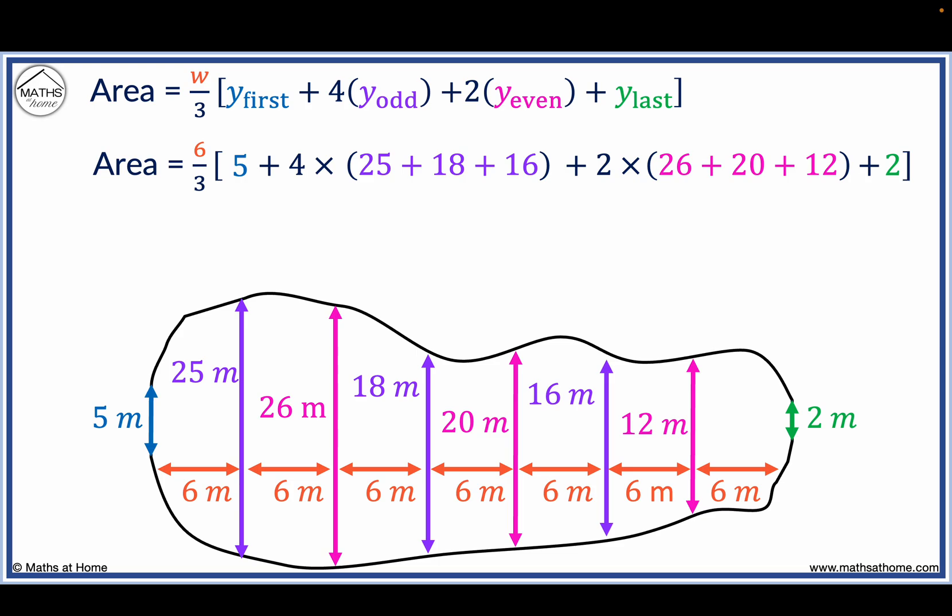We then add the Y odd measurements to obtain 59 and the Y even measurements to obtain 58. Now at the front of this equation, 6 over 3 equals 2. 4 times 59 equals 236 and 2 times 58 equals 116.